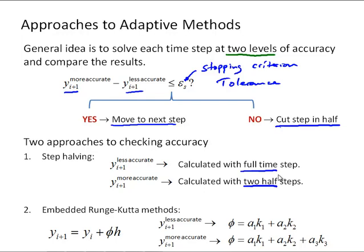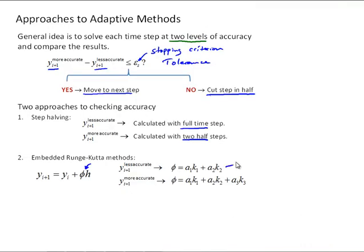The other approach is to use an embedded Runge-Kutta method. We call them Runge-Kutta methods, or one step methods, and the difference between the methods is how we calculate that increment function phi. So we can calculate our less accurate using a second order method. For example, here is a second order Runge-Kutta method. And then calculate our more accurate result using a third order method.